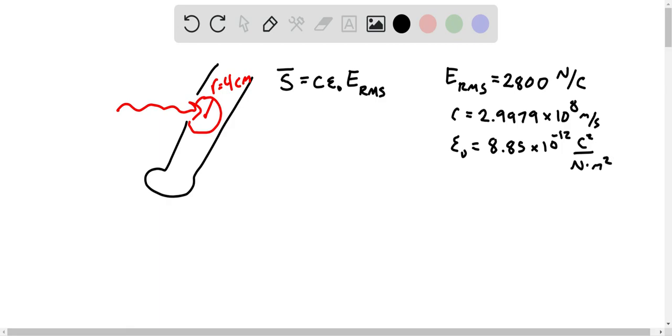And then just plugging all of this in, excuse me, this is squared here, the E RMS squared for our average intensity. Plugging all of that in, you should get that the average intensity is equal to about 2.1 times 10 to the 4th, and that is watts per meter squared. And that's the answer to part one.